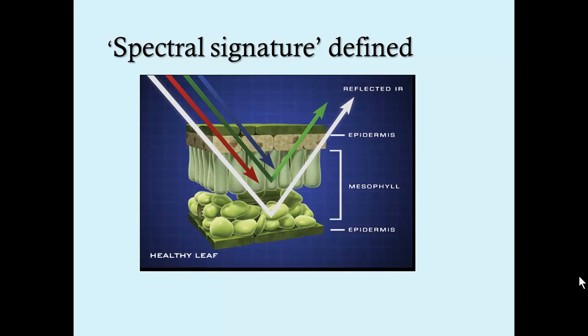Most of the green portion of the visible light spectrum is reflected, as is the infrared portion of the electromagnetic spectrum, which is represented by a white arrow here.